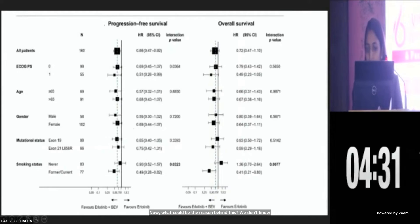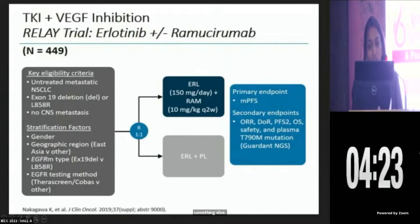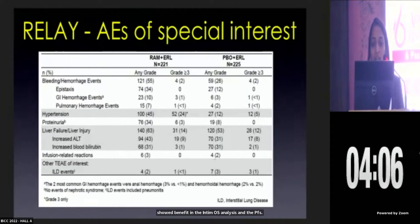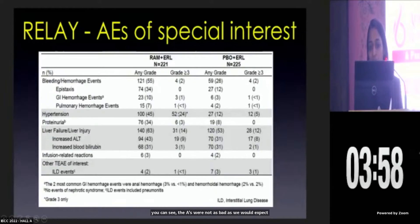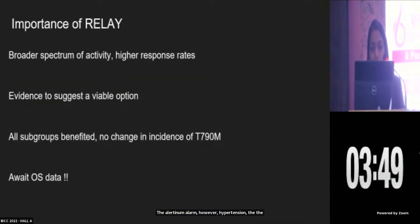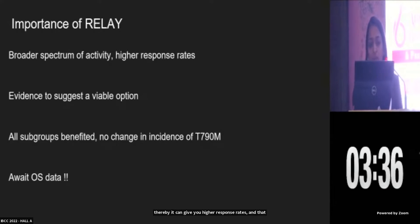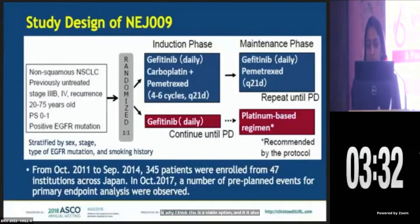Because EGFR mutations are not typically found in smokers, maybe in such patients the EGFR TKI works better when combined with something else. Coming to the RELAY trial, this looked at a combination of erlotinib with ramucirumab versus erlotinib with placebo. Its primary endpoint was PFS, which it met, and it also showed benefit in the interim OS analysis and the PFS2. The OS data is still awaited. The grade 3 adverse events were more or less similar in both arms, though the incidence of hypertension was high — which is easily manageable with oral medications. Ramucirumab has a broader spectrum of activity, thereby giving higher response rates, and it showed benefits across all subgroups.